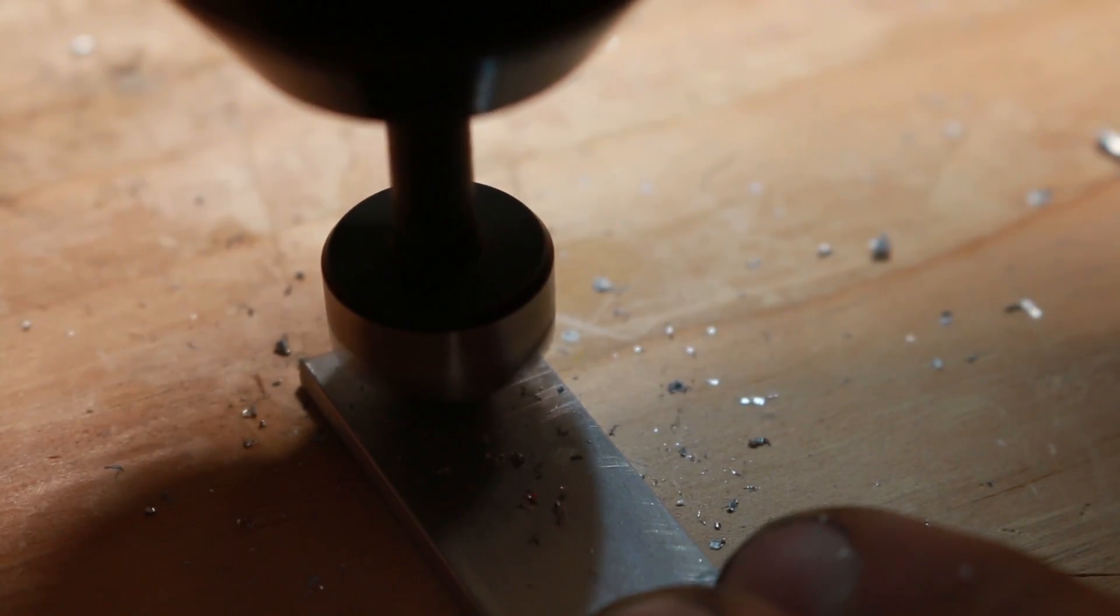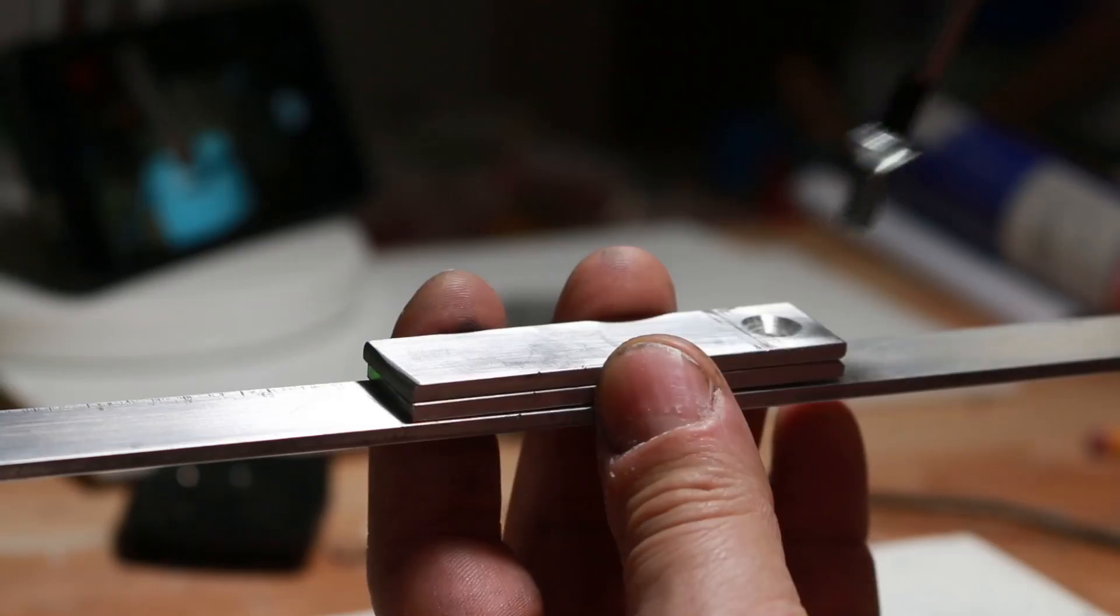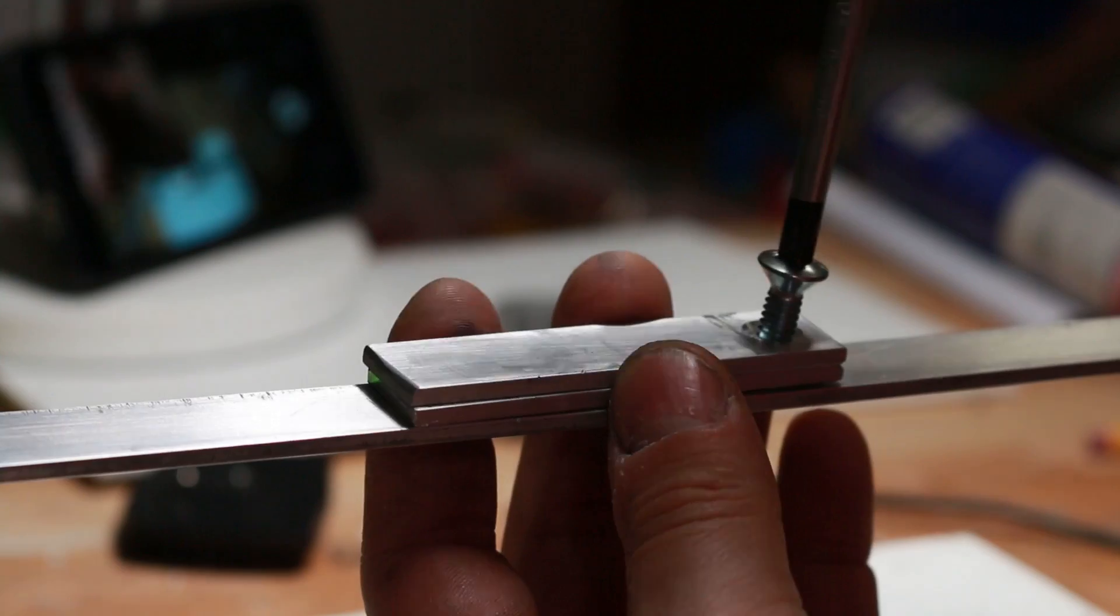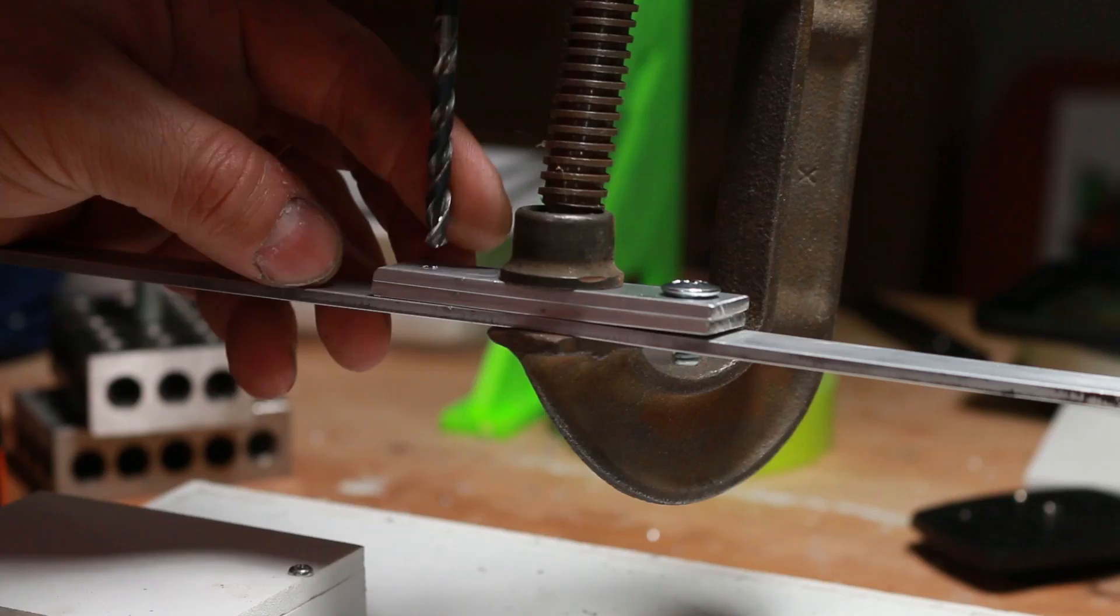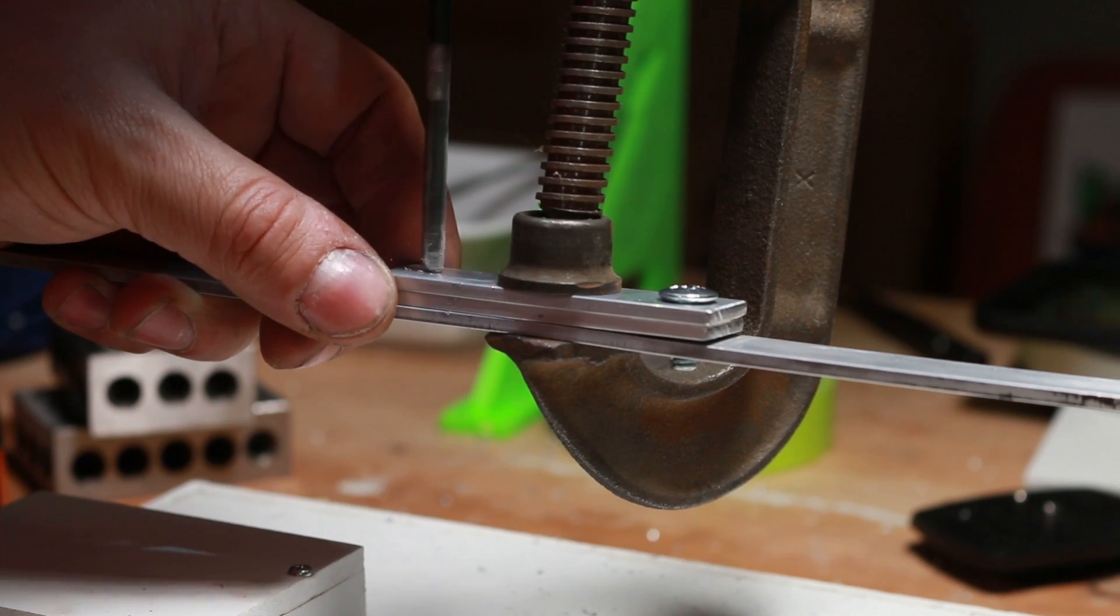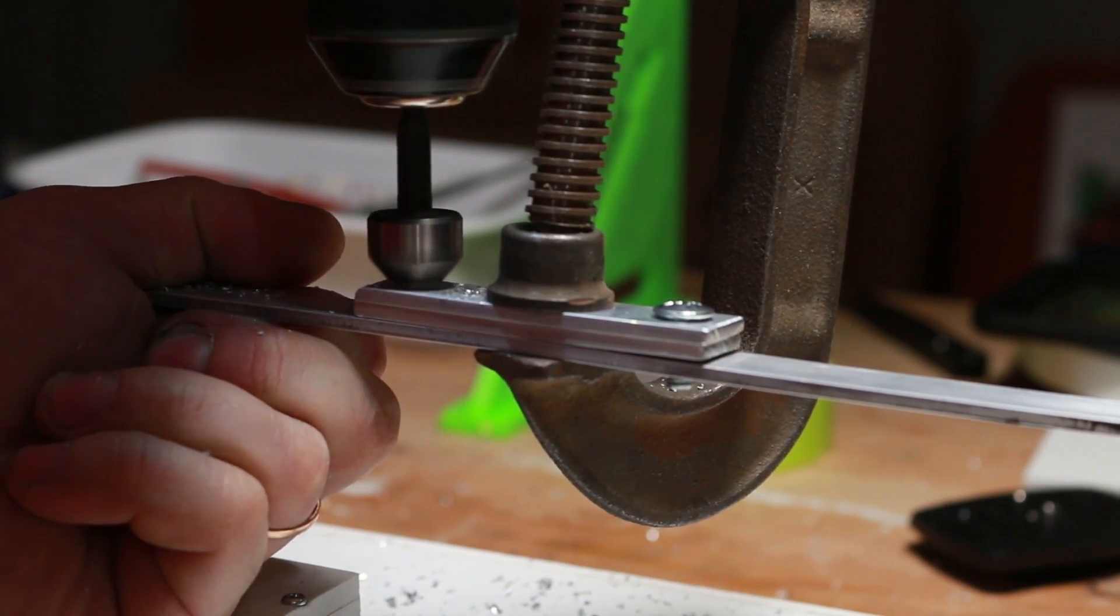Countersink the holes to accept the screws that's holding three pieces together. You will see that I'm using yet again wrong thing for the right job. I had oval head screws in hand. I had to grind the heads later on so the tripod shoe can sit flat on it.